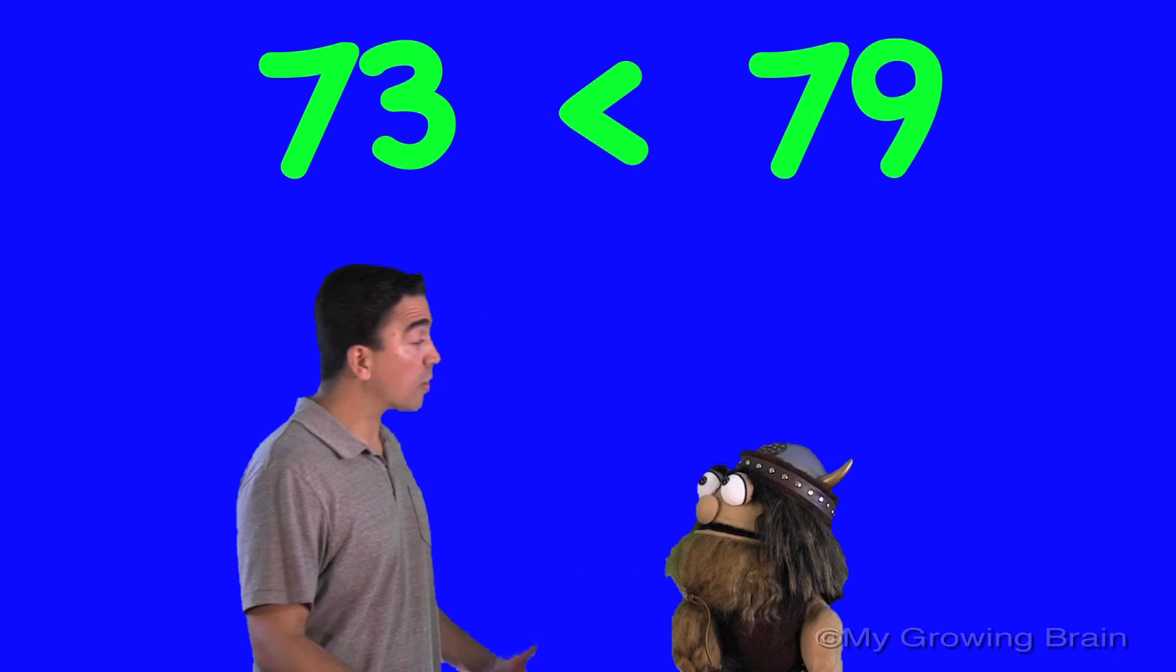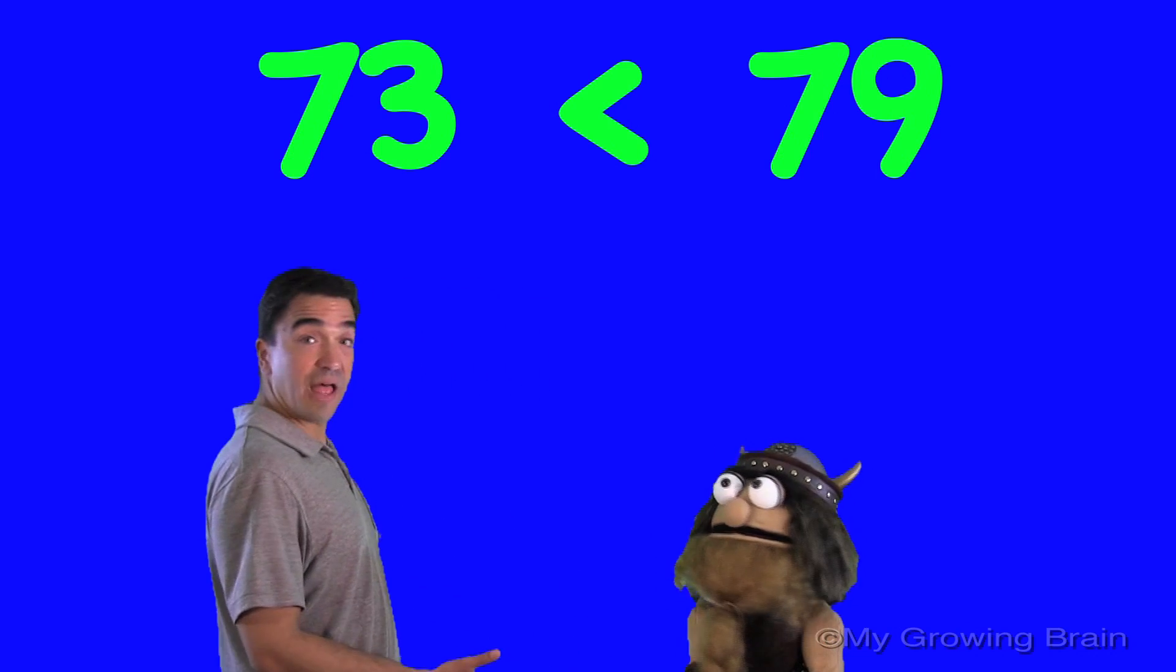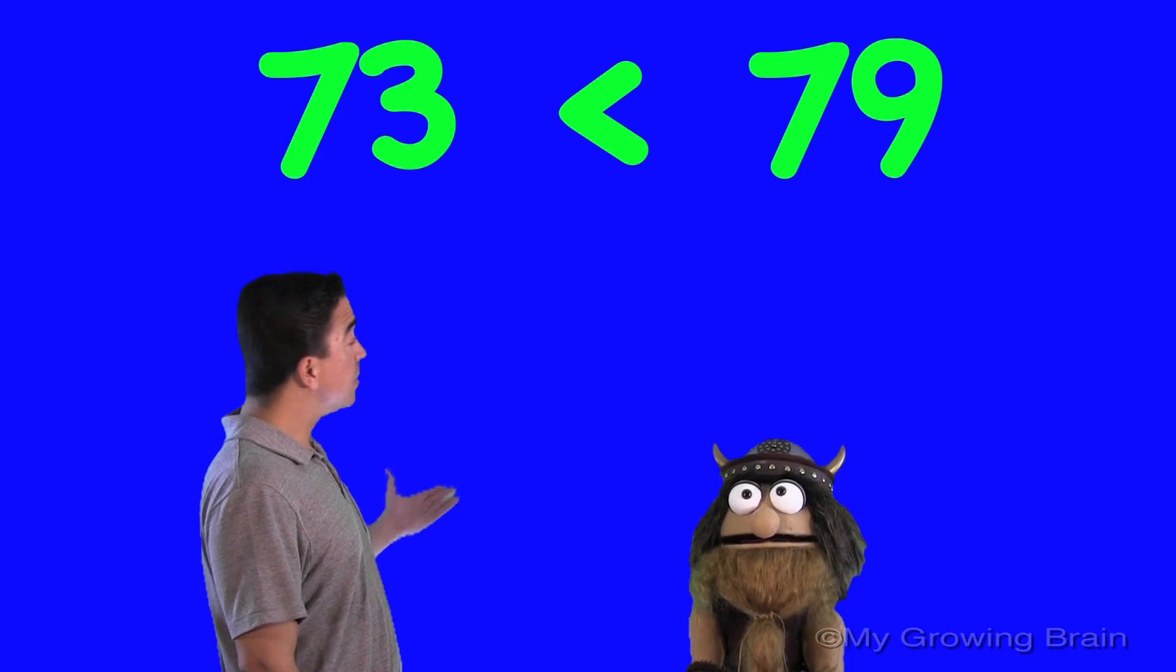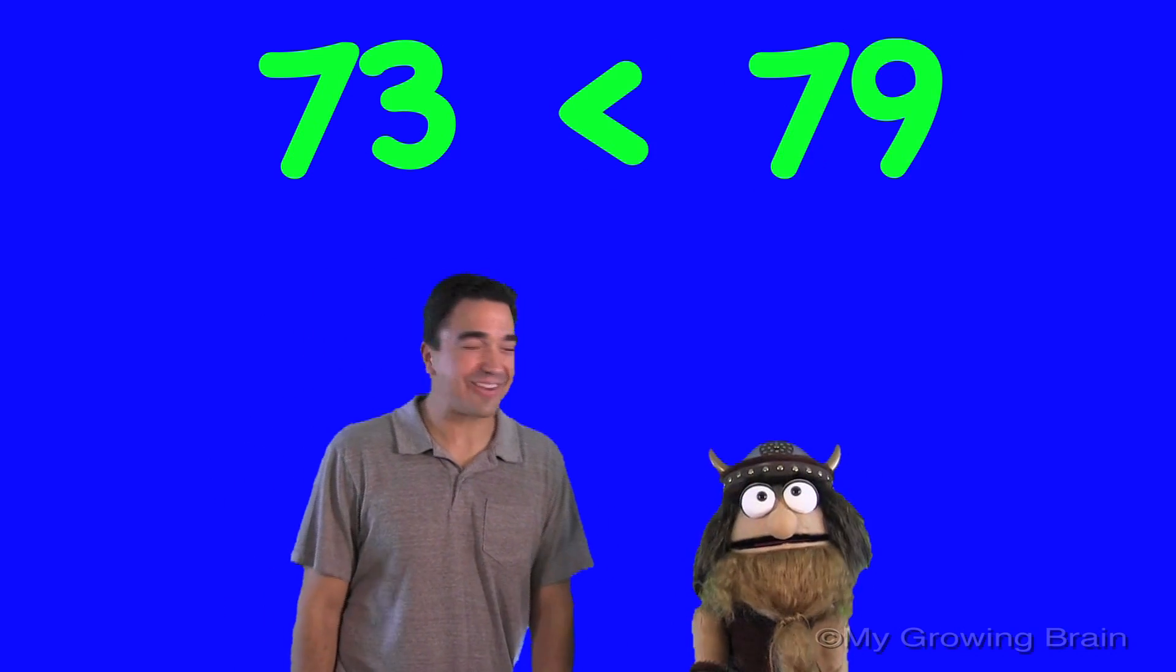Alright. So, now we're going to read this. Are you ready? Ready, Coach Mike. We're going to start from left to right. So... 73 is less than 79. That's correct. Good job, Ollie.